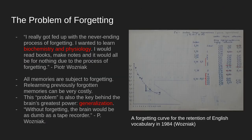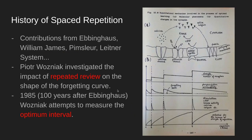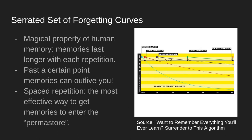Ebbinghaus didn't actually draw the curve — he had tables of data — but the reconstructed curve from his nonsense syllable experiments would have shown a much more precipitous decline, because nonsense isn't attached to anything coherent in prior knowledge. It may be that Ebbinghaus saw how steep the decline was and thought it was hopeless. The lesson: learn only coherent information. Don't memorize what you don't understand.